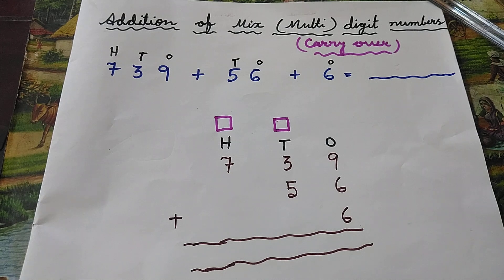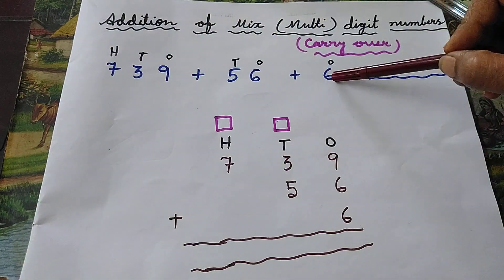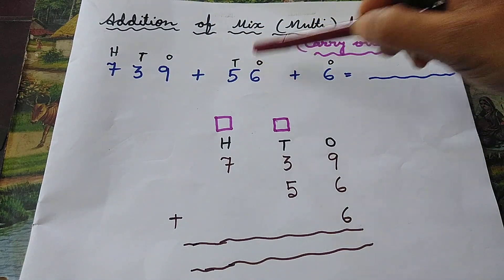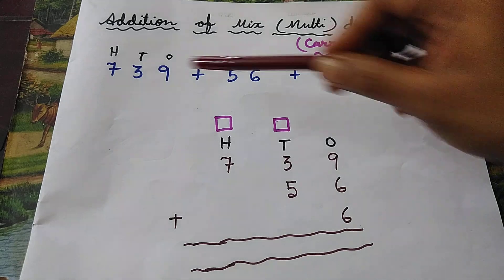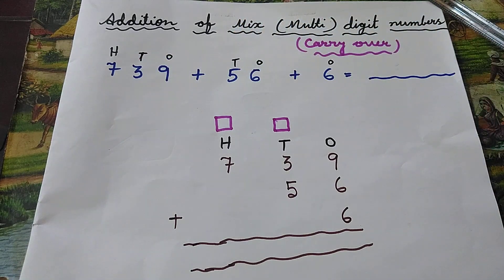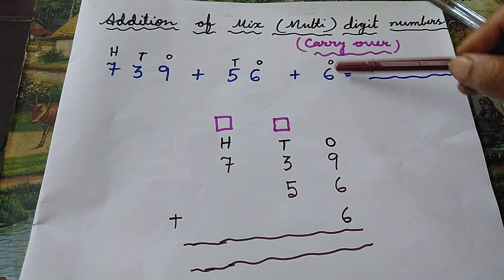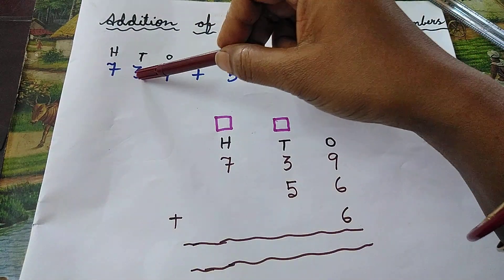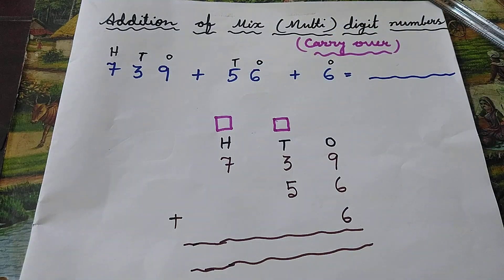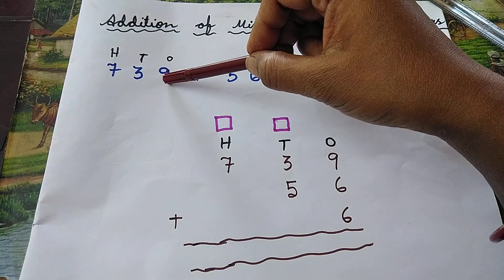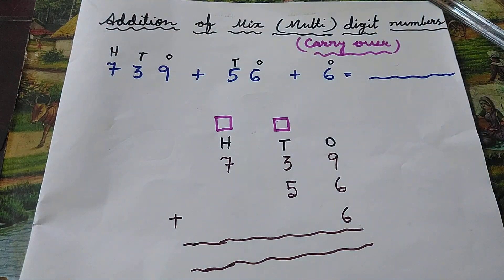Good morning children. Today I will discuss the addition of mixed digit or multi-digit numbers with carryover. There is an example: this is a three-digit number, this is a two-digit number, and this is only a single digit. We have to add these three. See children, which one is the biggest among all three? 739 — this is the biggest, and in this number the highest place is hundreds.